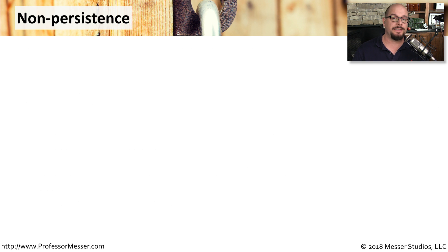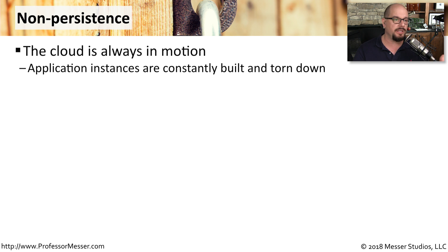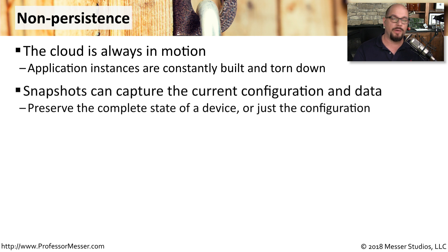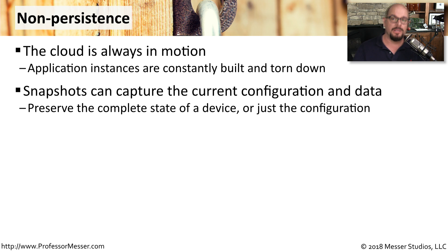Many application instances are not persistent — they might be built up and torn down in a matter of moments. The cloud is constantly in motion, and you need to account for when these changes might occur and how you can manage them. We rely on snapshots to capture a point in time of a particular configuration or application instance, which might preserve everything about a server or just its configuration so you could rebuild it later.